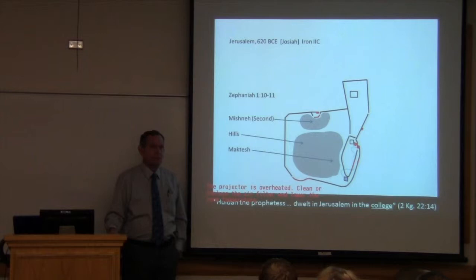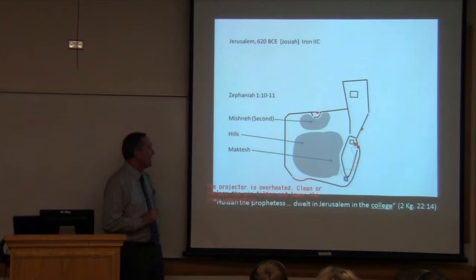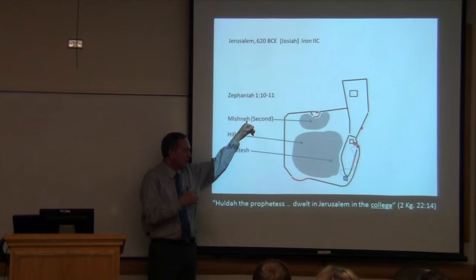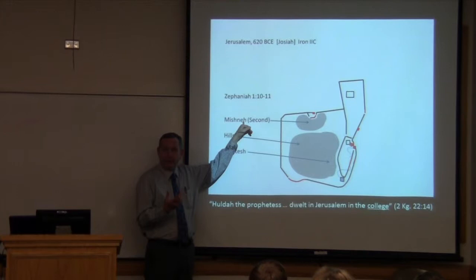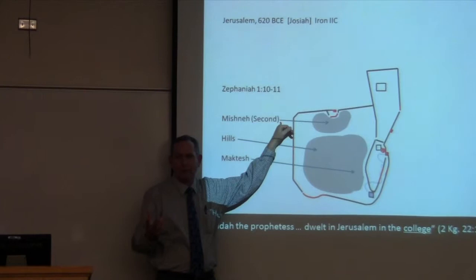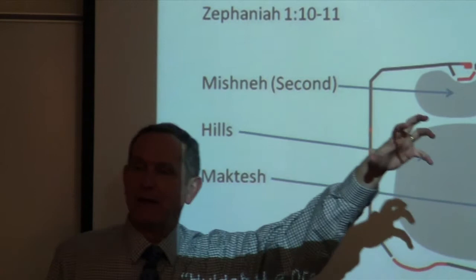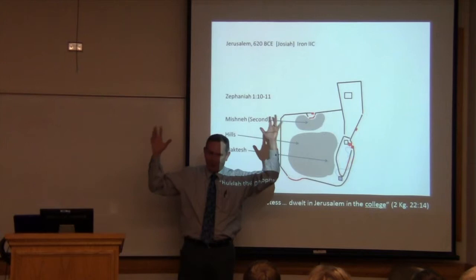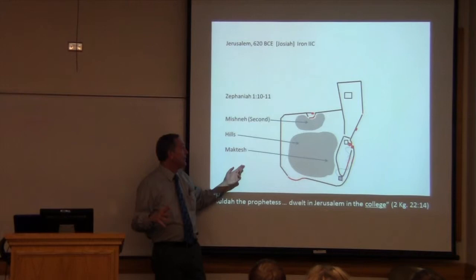Why the King James scholars decided that they should translate the Hebrew word Mishneh as college in this verse is a mystery. Because in Hebrew it says she dwelt in Jerusalem in the Mishneh. Now, in Zephaniah, it's simply called the second. There was a separate, a different group of King James scholars translating Zephaniah than translated second Kings. So when they came to this word that they didn't really know exactly what it meant, you get it two different ways in the book.